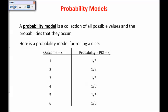Here is a probability model for rolling a dice — a very simple example, but it illustrates the point. The possible outcomes are one, two, three, four, five, or six, and the probability of each outcome is listed.